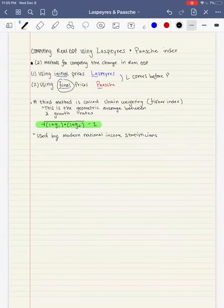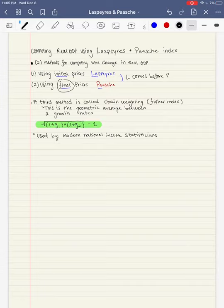All righty. Welcome, everybody. We're going to be doing a quick video today on how to compute real GDP using initial and final prices, or Laspeyres and Paasche Index. So very briefly, we have two methods for computing the change in real GDP.